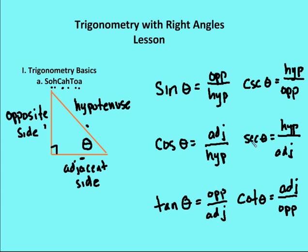If you know cosine, you can get secant, which is the hypotenuse over the adjacent. And if you know tangent, you can find cotangent, which is just the adjacent over the opposite. Tangent and cotangent are pretty easy — cotangent is just the reciprocal of tangent, and it only has tangent in its name, so I know cotangent is the reciprocal of tangent.